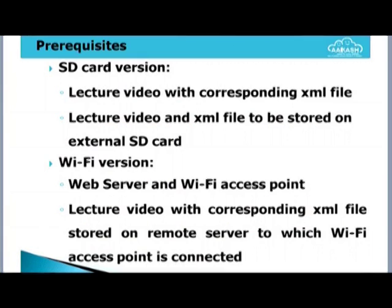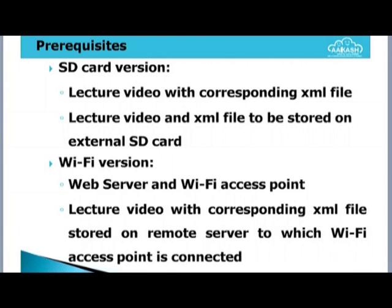We opted for Wi-Fi because of storage limitations. For the Wi-Fi version, we need a web server and a Wi-Fi access point. This Wi-Fi access point can be placed anywhere — in a hostel, a different department building, or a lab — and should have good connectivity with the server. Students connect to this Wi-Fi access point to stream the data. The lecture videos and all corresponding XML files should be stored on the remote server to which the Wi-Fi access point is connected.